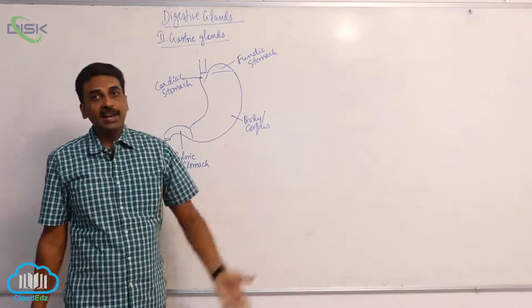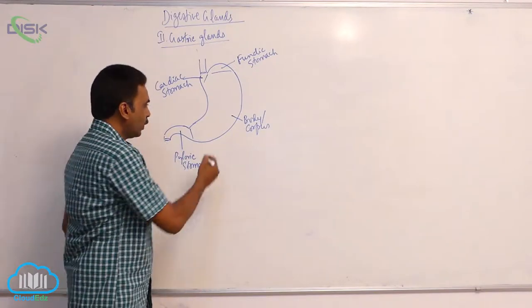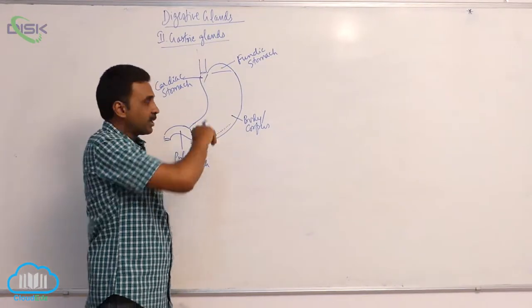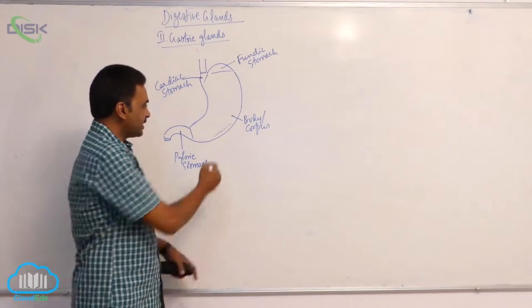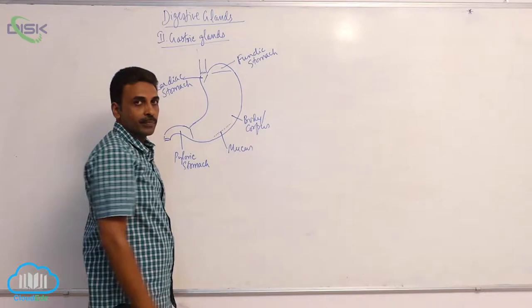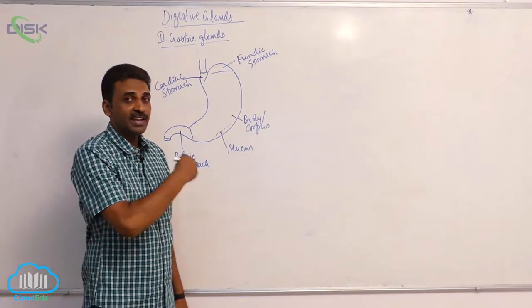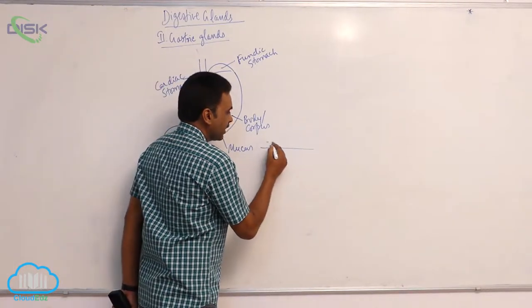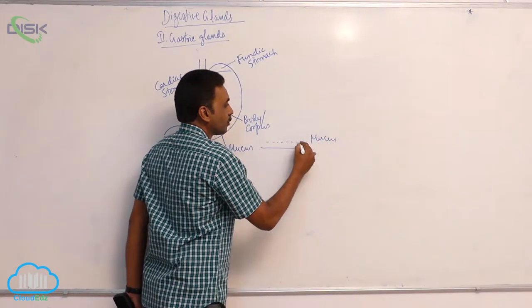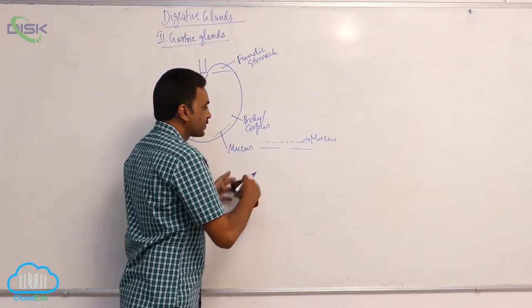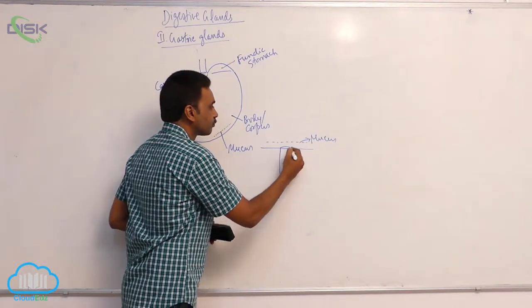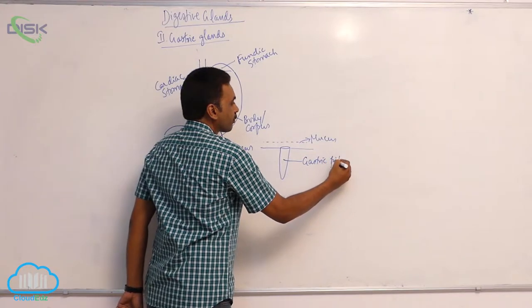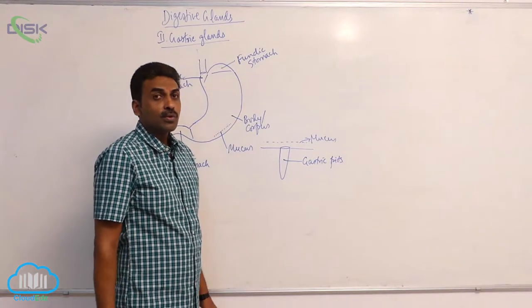Where are gastric glands present? Inside the stomach wall, there is a mucus layer about two millimeters thick. When I remove the mucus layer, inside you will find pits. These pits are called gastric pits, also called foveola gastrica.